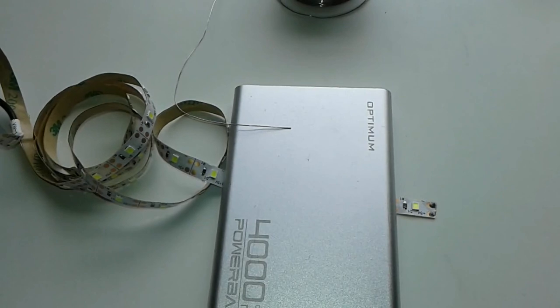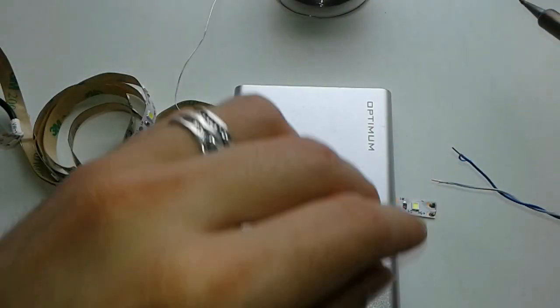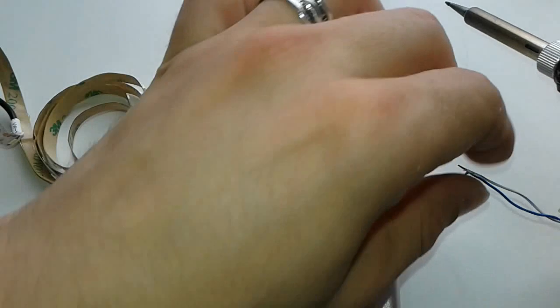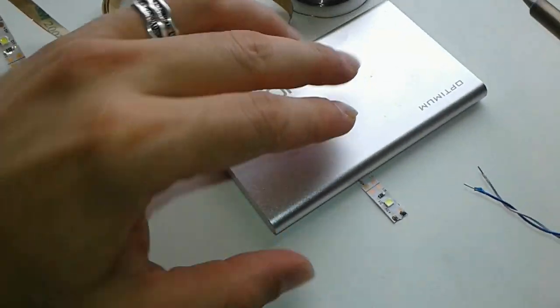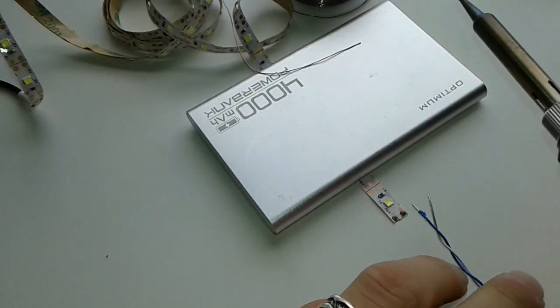All right, we have put some solder into these terminals and now we're gonna just connect the wires. As I told you, blue is gonna be the positive and white it's gonna be the negative. Just bear with me for a while.